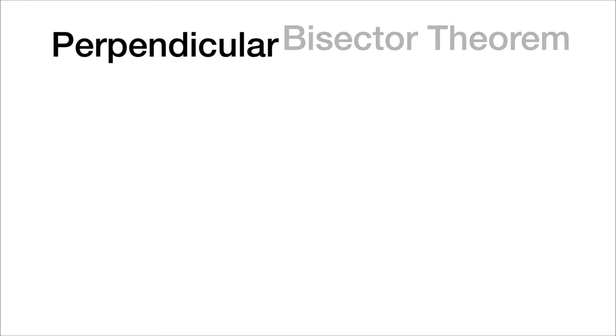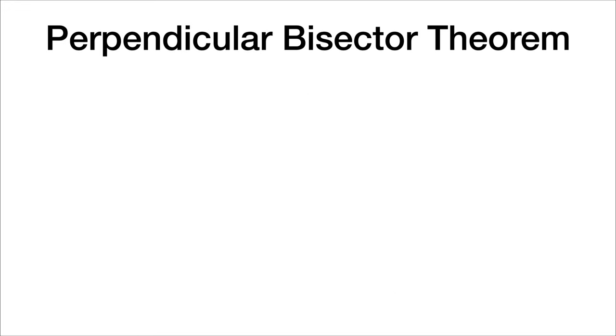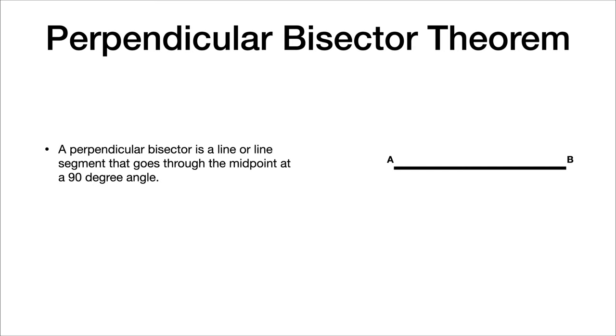So today we're going over perpendicular and angle bisectors. Let's start by talking about the perpendicular bisector theorem. But to actually talk about that, we first need to remind ourselves what a perpendicular bisector is. First we have a line segment AB. A perpendicular bisector is a line or line segment that goes through the midpoint at a 90 degree angle, which means the distance from A to this line or B to this line is equal.